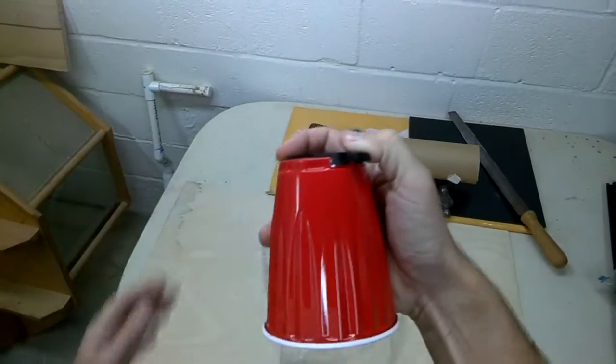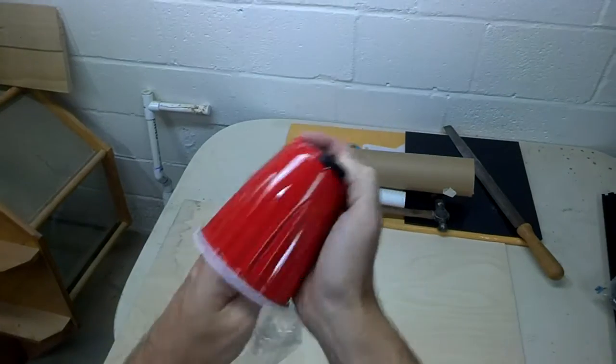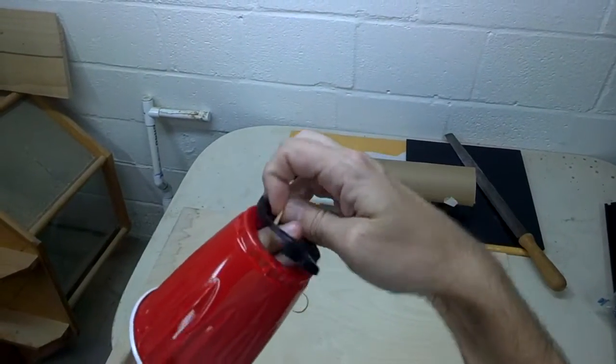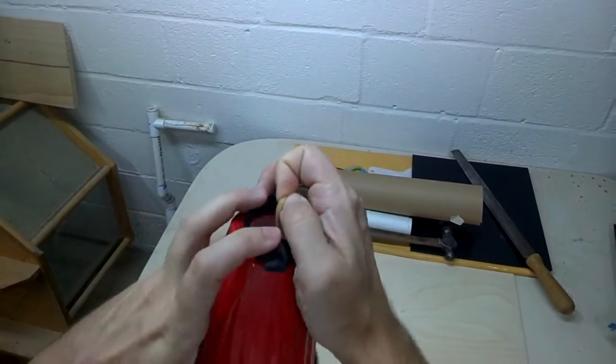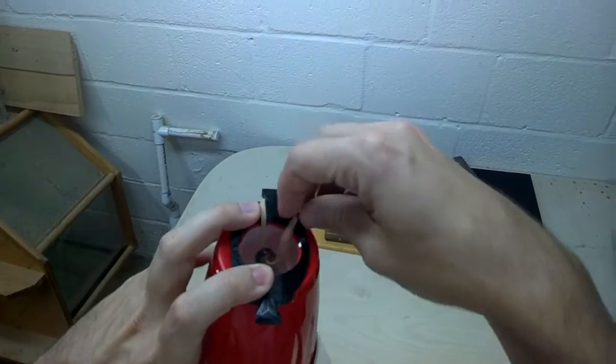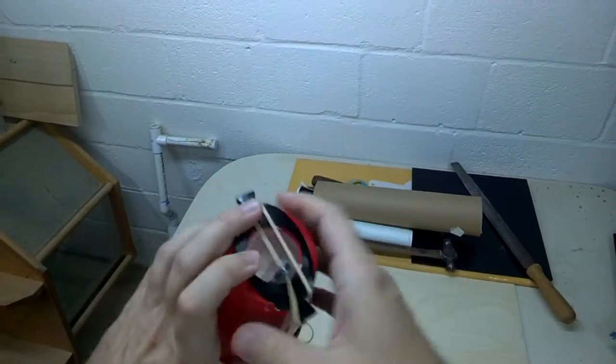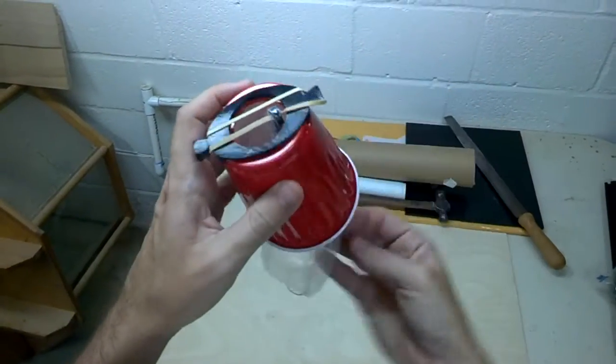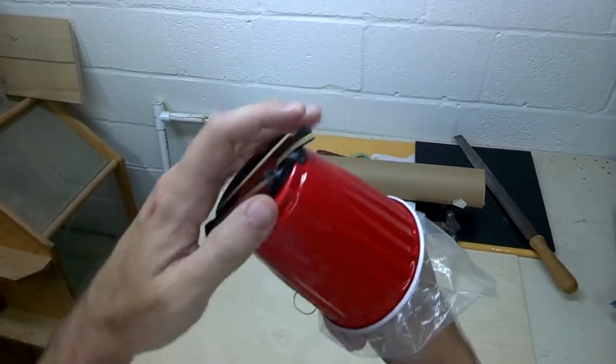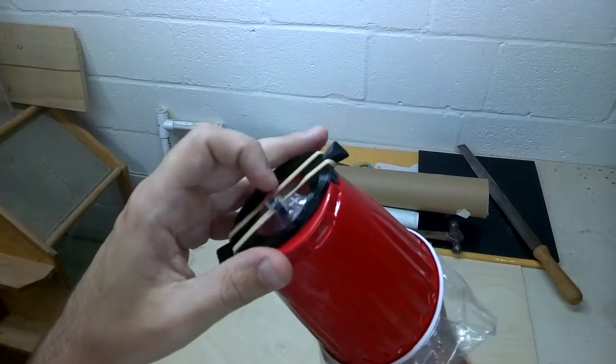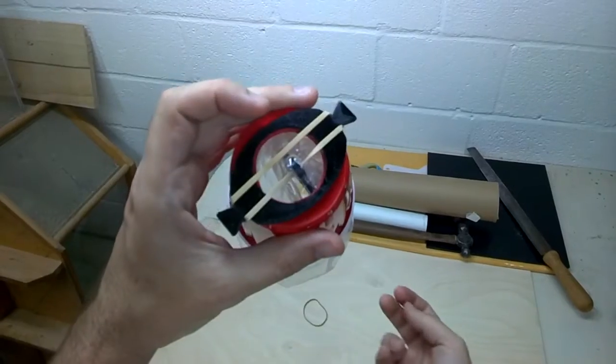Take your rubber band. Go through here. Wrap it around one side, and the other. Very simple. You want to get that just about centered.